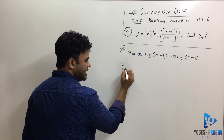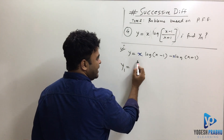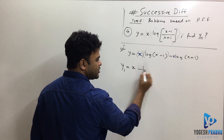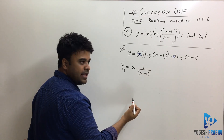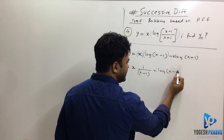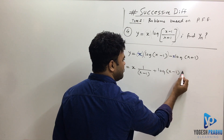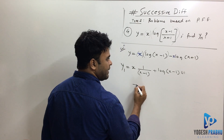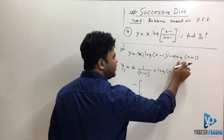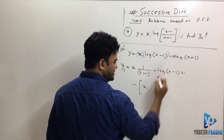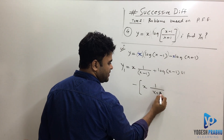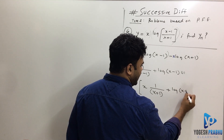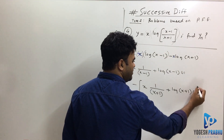Let me find the first derivative y₁ using the u·v format. The first term gives: u as-is times derivative of log(x−1), which is 1/(x−1), plus log(x−1) as-is times derivative of x, which is just 1. Then there's a minus sign — don't forget that — and again u·v gives x as-is times derivative, which is 1/(x+1), plus log(x+1) as-is times 1.